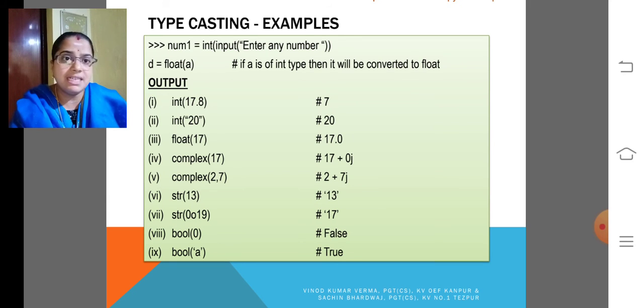Then, float 17. That becomes 17.0. So, complex 17 becomes 17.0j. Complex 2,7. That means two arguments we had given. One is for the real.